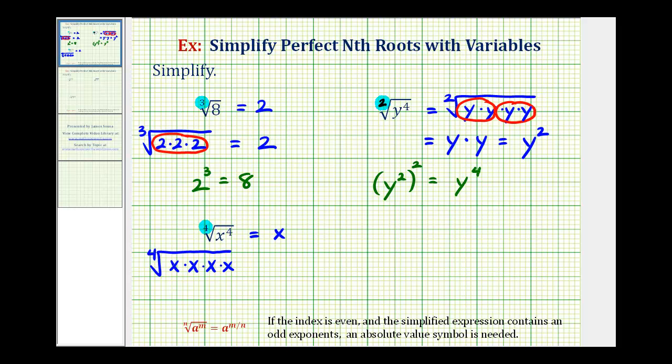Because the index is four, we're looking for four equal factors, which we have here. Therefore, it simplifies to just one factor of x. And again, the reason for this is x raised to the power of the index, or four, is equal to our radicand, which is x to the fourth.